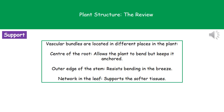The last thing to consider is the support that these vascular bundles actually provide. They're located in different places in different parts of our plant, and the reason behind that is to do with the different support needed. In the center of the root, the location allows the plant to bend but keeps it anchored in the soil. In the stem, they're around the outer edge, allowing it to bend a little in the breeze but not too much. And finally, the network of veins in the leaf supports the softer tissues and gives them that broad surface area.